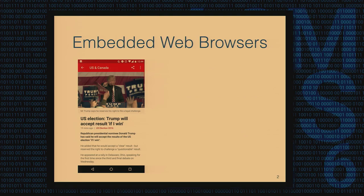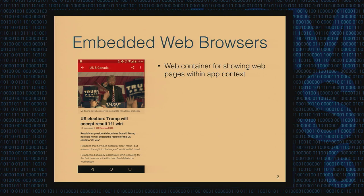Mobile platforms offer developers many tools for creating better applications and for improving user experience. One good example of this kind of tool would be embedded web browsers. These are web containers for displaying web pages within the context of an app so that you don't have to start a heavyweight full-fledged web browser. The picture on the left is an example — it's the BBC app pulling a web page from the bbc.com domain, and it's using embedded web browsers to do this.